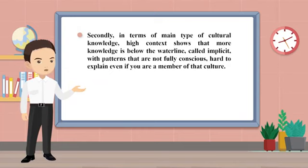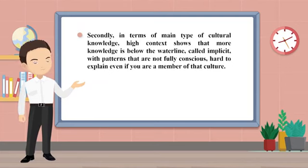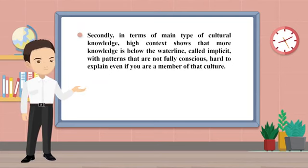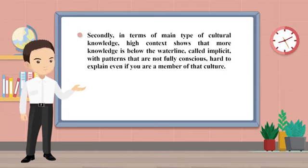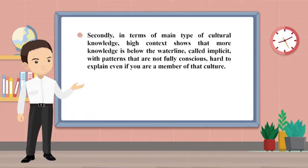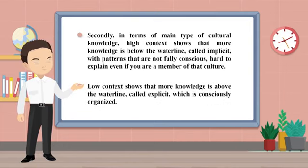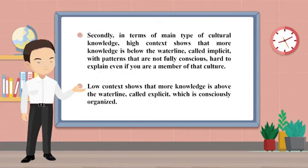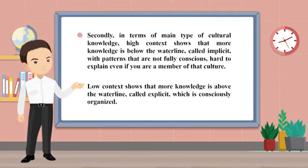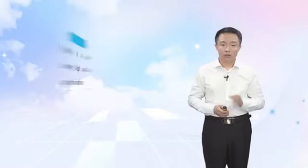Secondly, in terms of the main type of cultural knowledge: high context shows that more knowledge is below the waterline — called implicit — with patterns that are not fully conscious and hard to explain even if you are a member of that culture. Low context shows that more knowledge is above the waterline — called explicit — which is consciously organized.